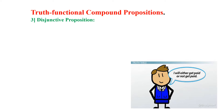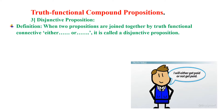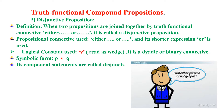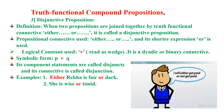When I say 'I will either get paid or not get paid,' either...or is the connective used, then it is a disjunctive proposition. When two propositions are joined together by the Truth Functional Connective either...or, it is called a disjunctive proposition. The propositional connective used is either...or, and its shorter expression or is used. The logical constant used here is small v, called the wedge. It is a dyadic or binary connective, and the symbolic form is P wedge Q.